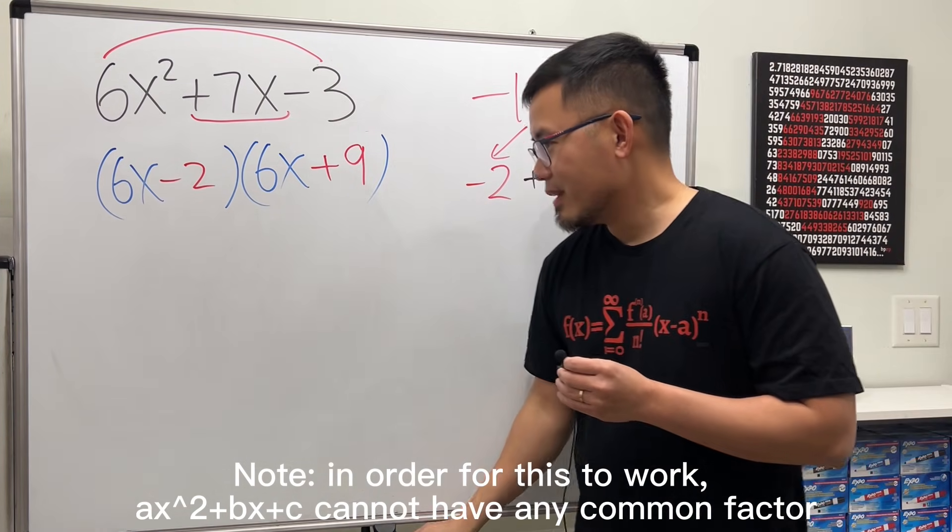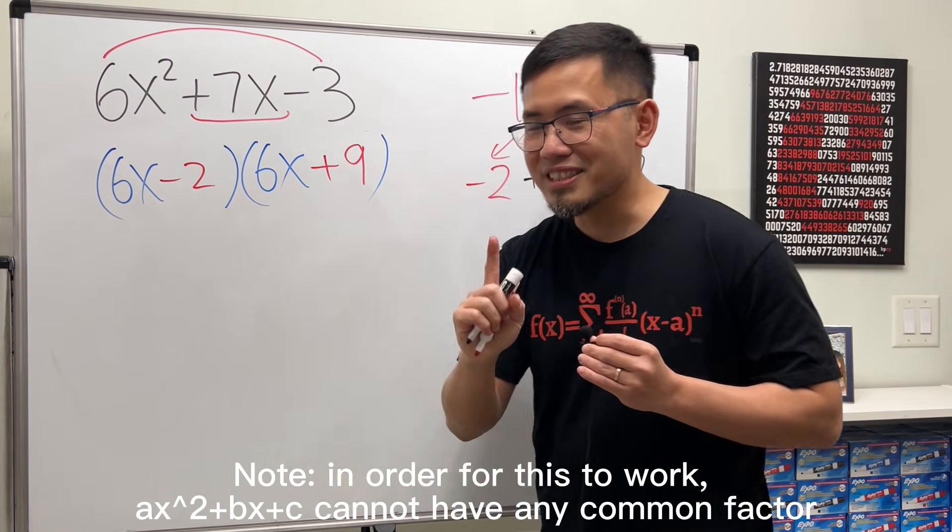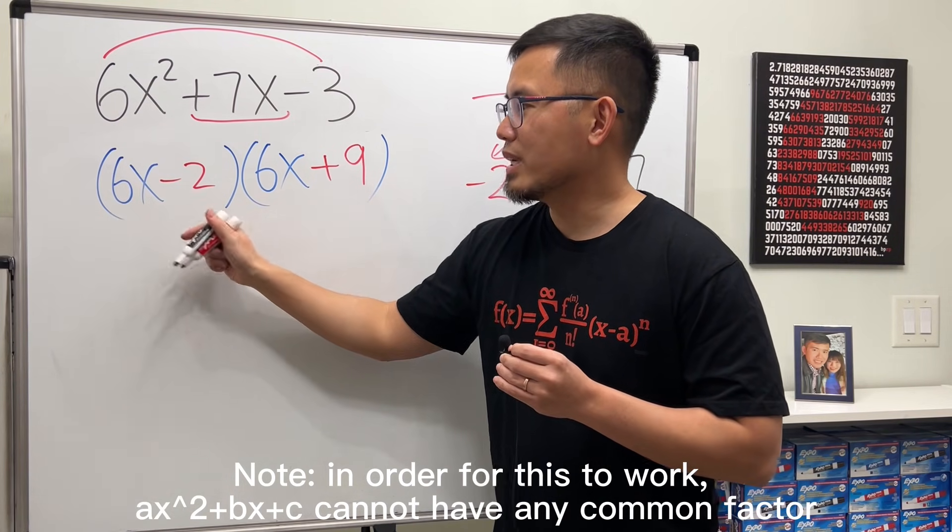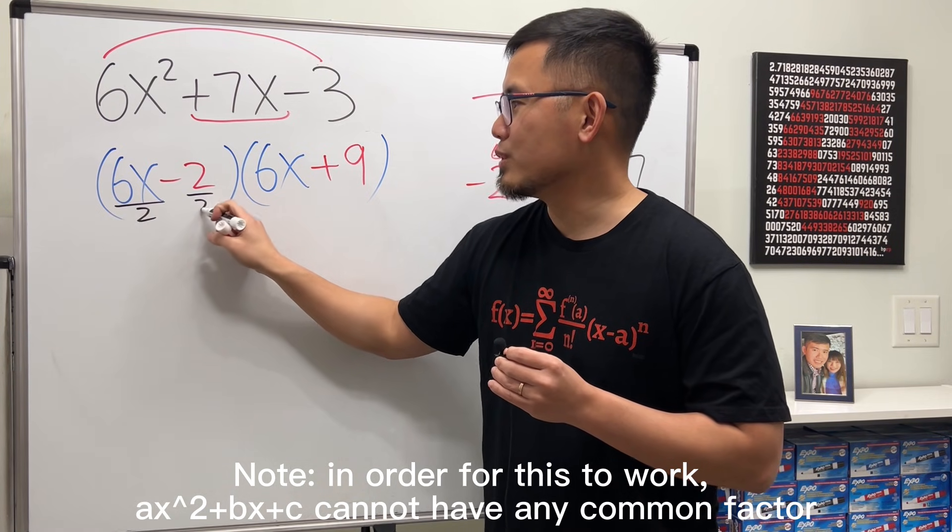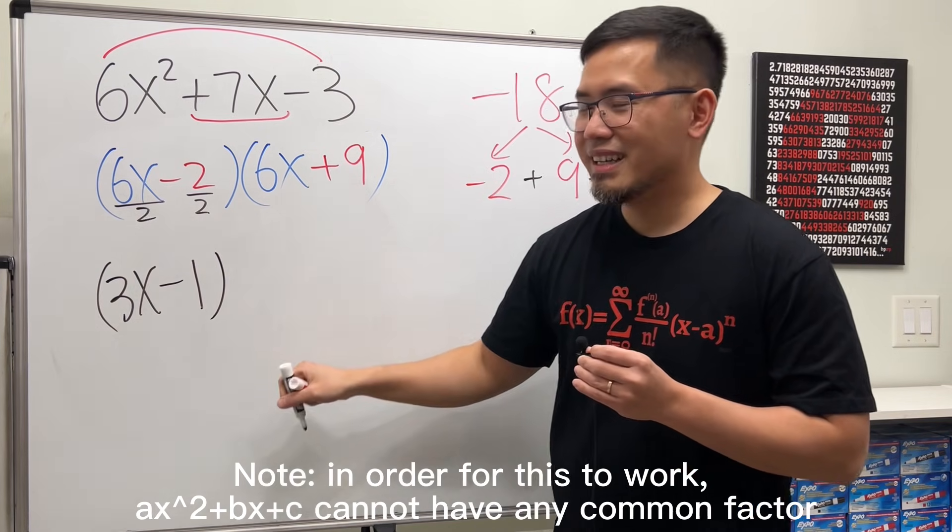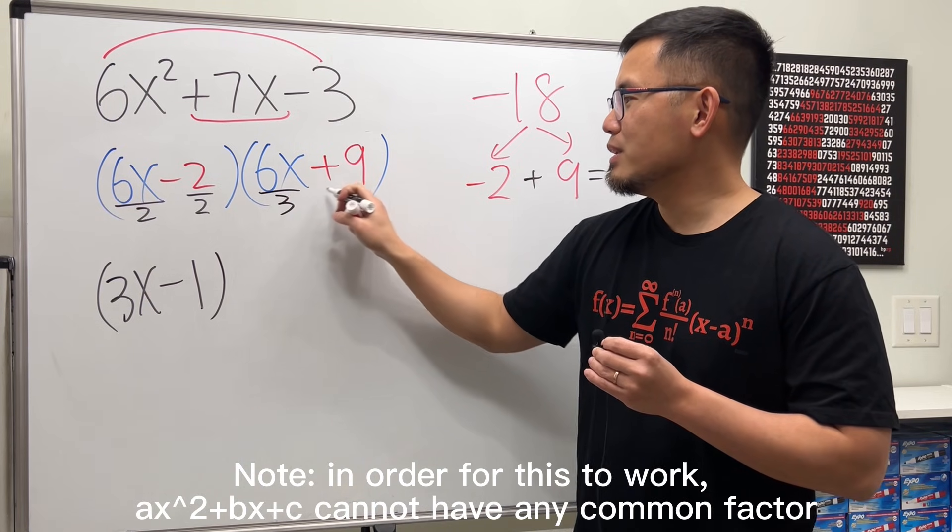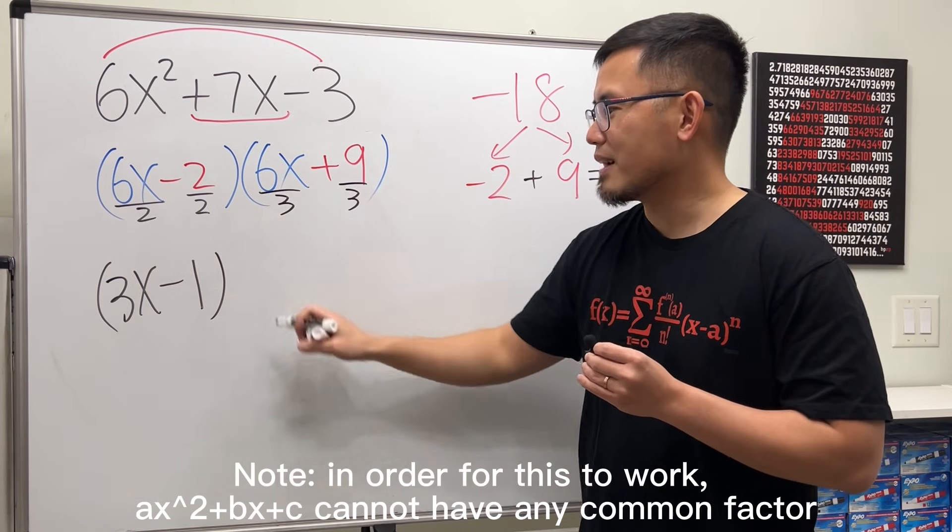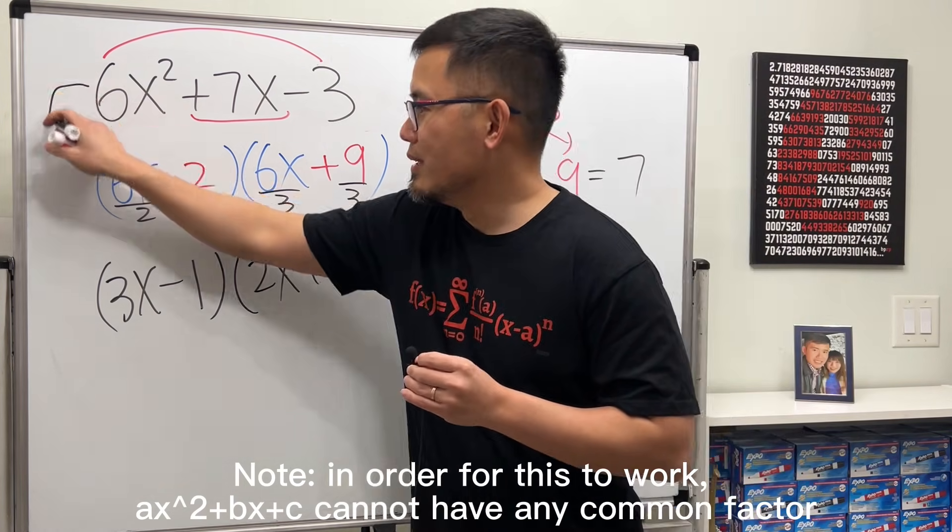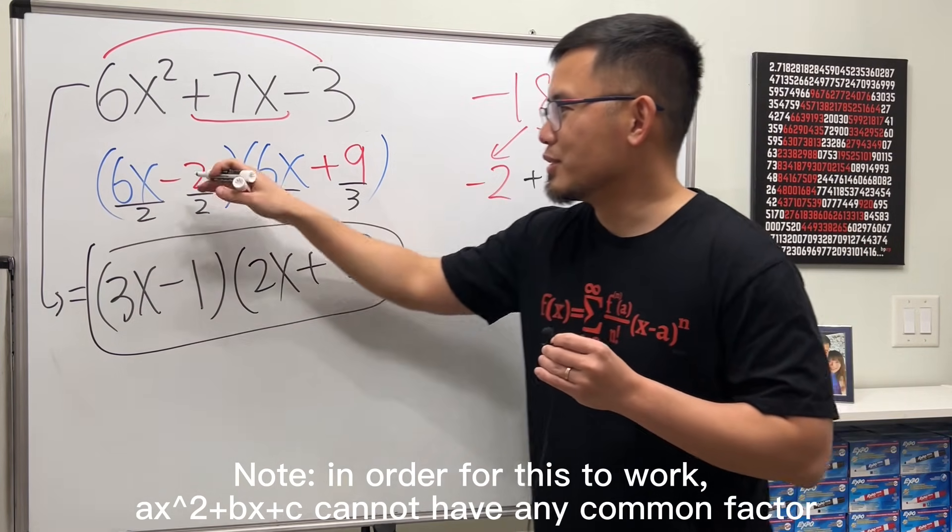And then, let's go ahead and enter minus 2 and then plus 9. Notice I didn't put an equal sign because this is not equal to this. But, check this out. Here we have 6x and 2. 6 and 2, we can divide by 2, reduce that by 2, and we will get 3x minus 1. First factor. 6 and 9, we can have a common factor as 3. We can divide this by 3. Divided by the common factor, we get 2x and plus 3. I can tell you this is equal to that. This is just like an intermediate step.